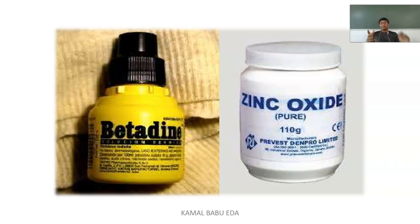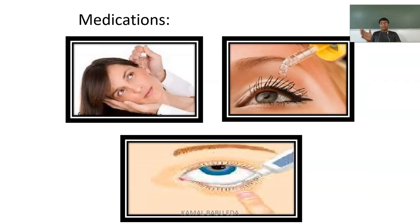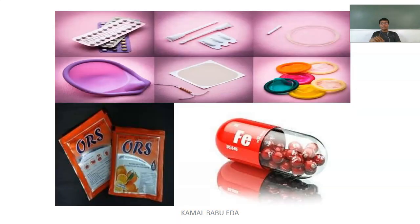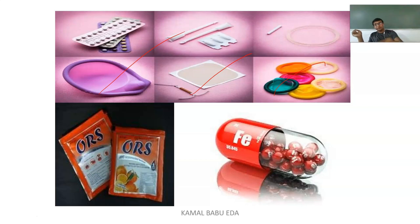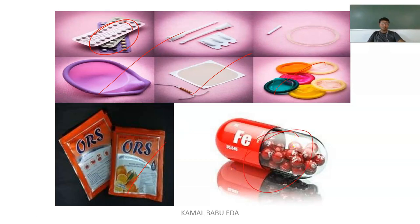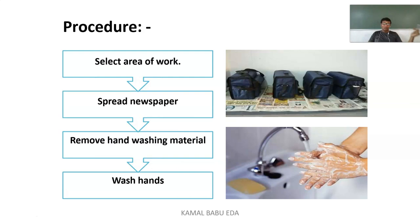The bag also contains acetic acid, betadine, and zinc oxide. For eye irrigation, it contains the necessary medications. It contains regular oral supplementations and, if needed, temporary family planning methods such as female condoms, male condoms, copper T, and other latex contraceptives for pregnancy prevention. It contains oral pills, oral rehydration therapy, and iron capsules mainly given for pregnant women and adolescent girls.